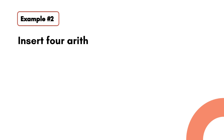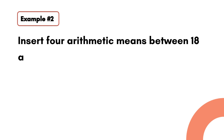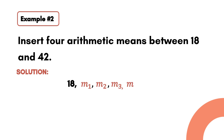Let's have the next example: insert 4 arithmetic means between 18 and 48. Here is how to do that — we copy the first term, insert the 4 arithmetic means, and then place the last term.